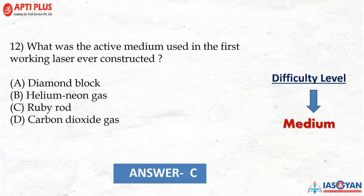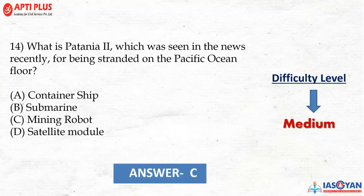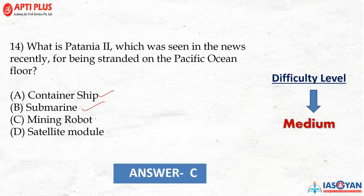Question 12: Which active medium was used for the first working laser ever constructed? The options were diamond block, helium-neon gas, ruby rod, or carbon dioxide gas. The correct answer is ruby rod. Question 13: 'Unicorn' is the name of which space body recently discovered 1,500 light years away from Earth? The correct answer is black hole. Question 14: What is Patania 2, which was recently seen in news for being stranded on the Pacific Ocean floor? The correct answer is a mining robot.